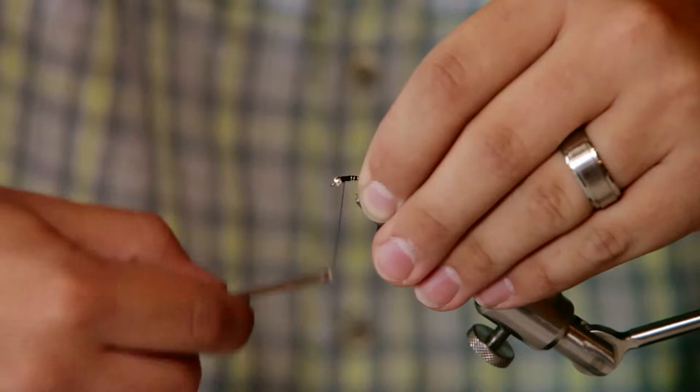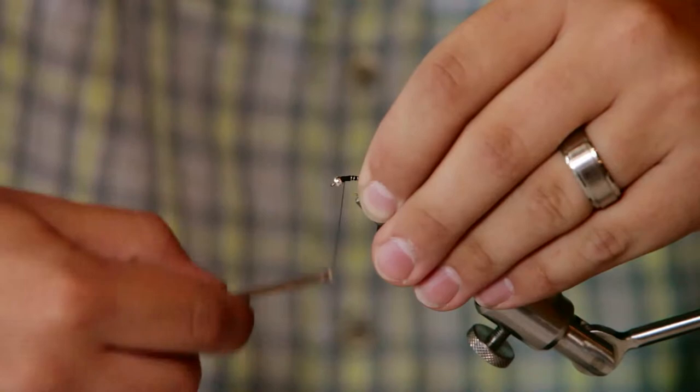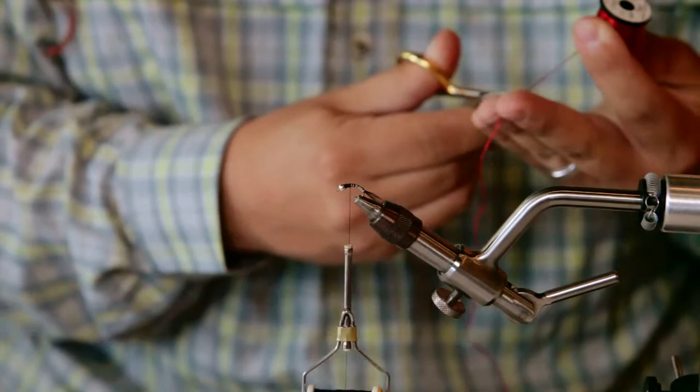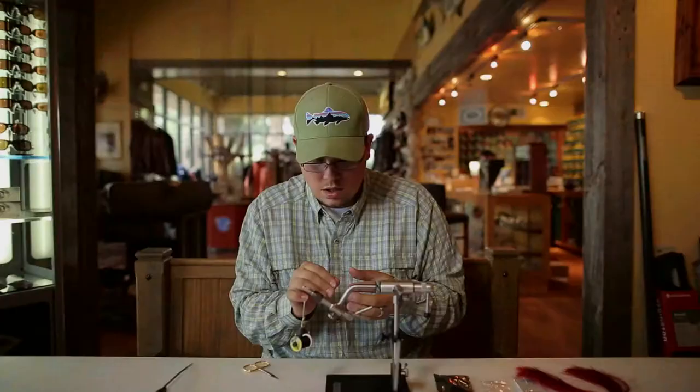Now that I'm done with that, I'm going to build up a little bit more of a thorax here, and I'm going to take my unifloss, which is going to be the wing case of the pattern. I'm going to take a strand of unifloss and tie that in at the thorax.